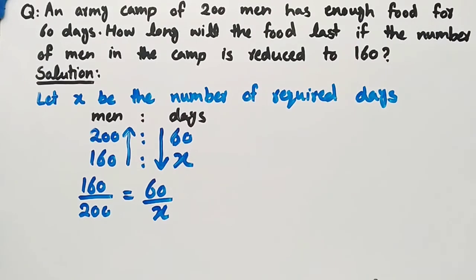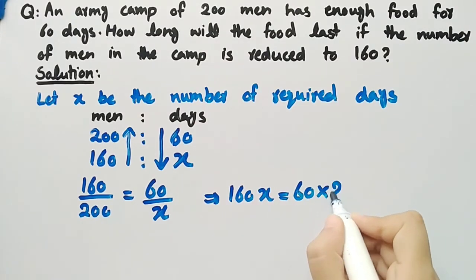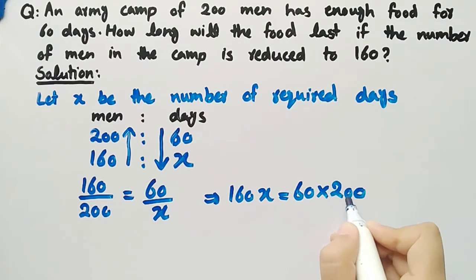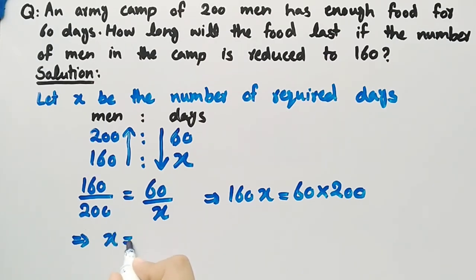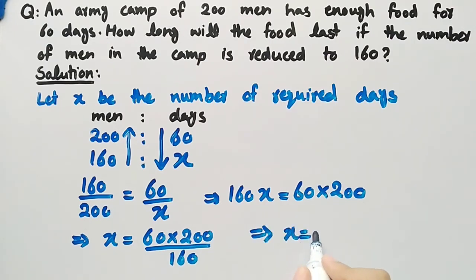Now by cross multiplying we get 160 times X equal to 60 multiplied by 200. Now by dividing both sides by 160, we get X equal to 60 multiplied by 200 divided by 160. Now after simplifying, we get X equal to 75.